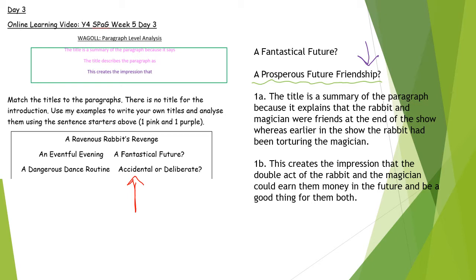So obviously we've used the word 'future' in the example, but there's also in the title, the word 'prosperous' means that it's going to earn them money. That is actually what it means. And if it's going to earn them money, it's probably going to be a positive thing. So I've just tried to explain that in my purple sentence.